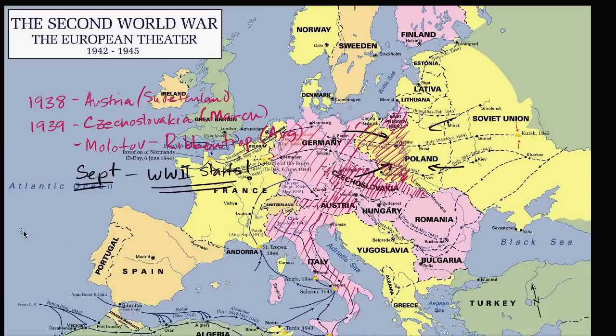Now we are going to enter into 1940, and we're going to see that in 1940 and 1941, things only start to accelerate in the Nazis' — and as we'll soon call them — the Axis Powers' favor.